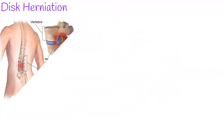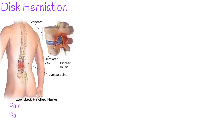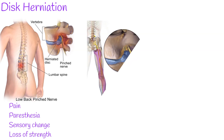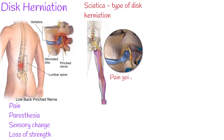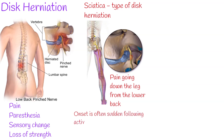Disc herniation — Presentation: Pain may include paresthesia, sensory change, loss of strength, or loss of reflexes, depending on severity and the nerve root involved. A common type is sciatica, where pain travels down the leg from the lower back. Onset is often sudden following activities like heavy lifting, though gradual onset may also occur. The pain is often described as shooting.